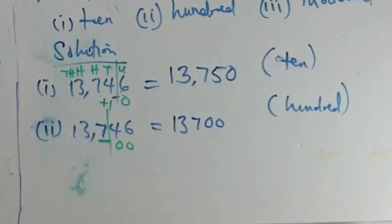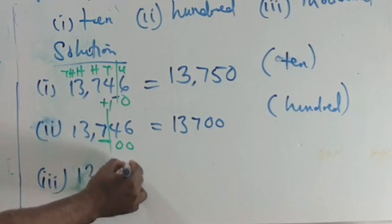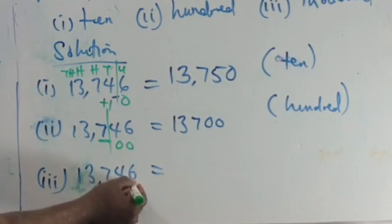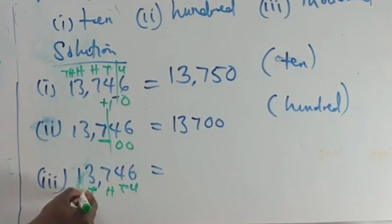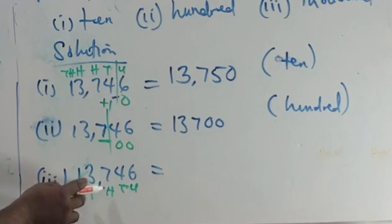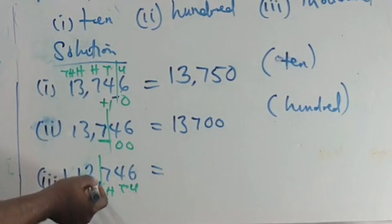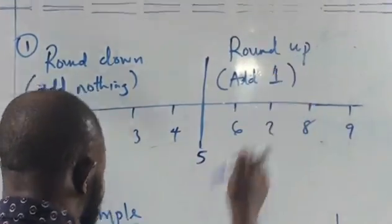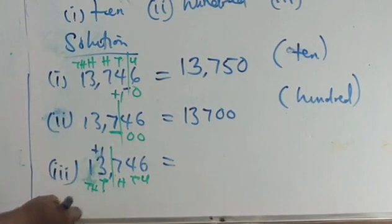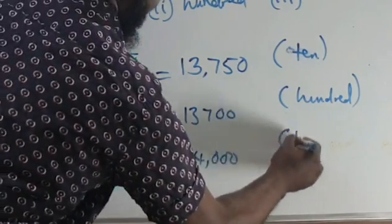For the third one, we want to round 13,746 to the nearest thousand. This is units, tens, hundreds, thousands, tens of thousands. We are stopping at the thousands digit, which is 3. We consider the next digit, which is 7. Since 7 falls in the range of five and above, we add 1 to 3. So our answer will then be 14,000.